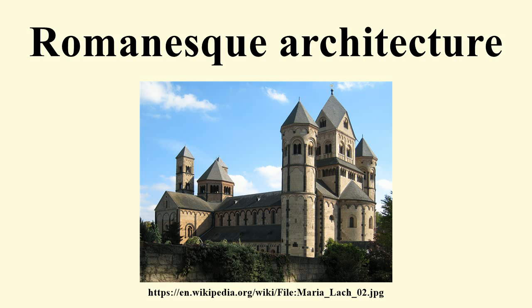Romanesque architecture was the first distinctive style to spread across Europe since the Roman Empire. With the decline of Rome, Roman building methods survived to an extent in Western Europe, where successive Merovingian, Carolingian and Ottonian architects continued to build large stone buildings such as monastery churches and palaces. In the more northern countries, Roman building styles and techniques had never been adopted except for official buildings, while in Scandinavia they were unknown. Although the round arch continued in use, the engineering skills required to vault large spaces and build large domes were lost.